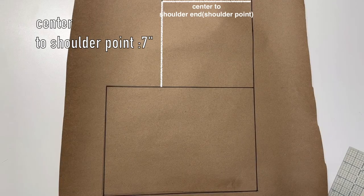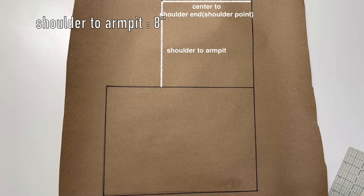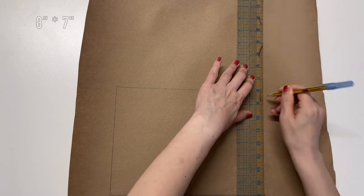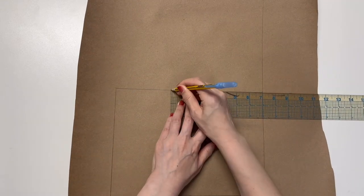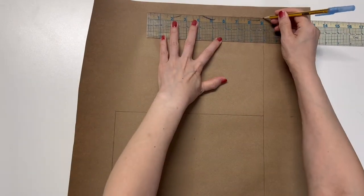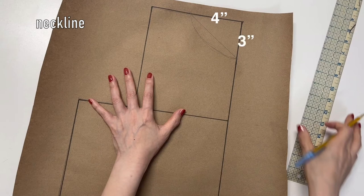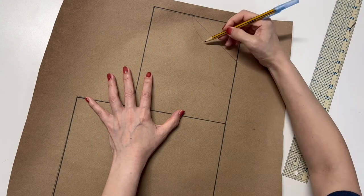Draw another rectangle above it. Mine is 8 inches by 7 inches. Mark 3 inches and 4 inches from the top corner. Connect them together. It's gonna be your neckline.